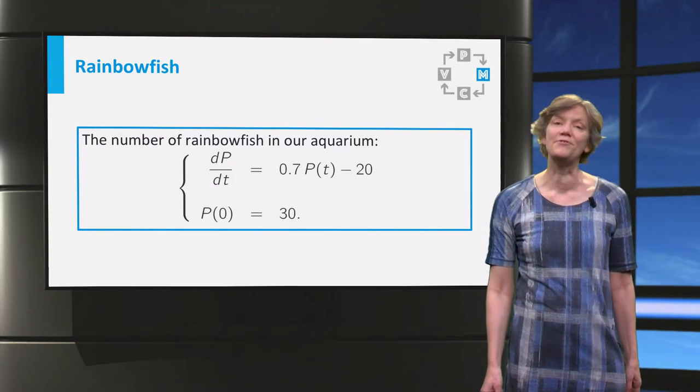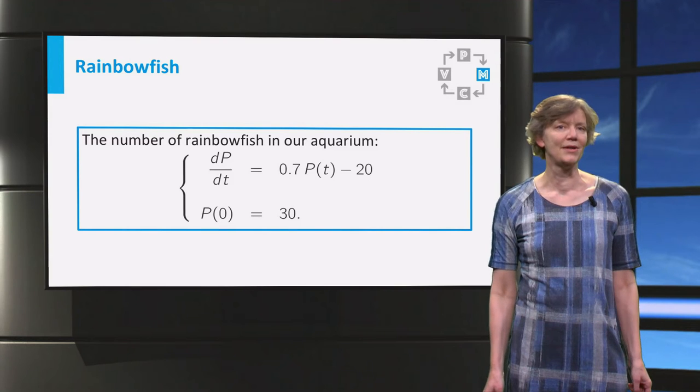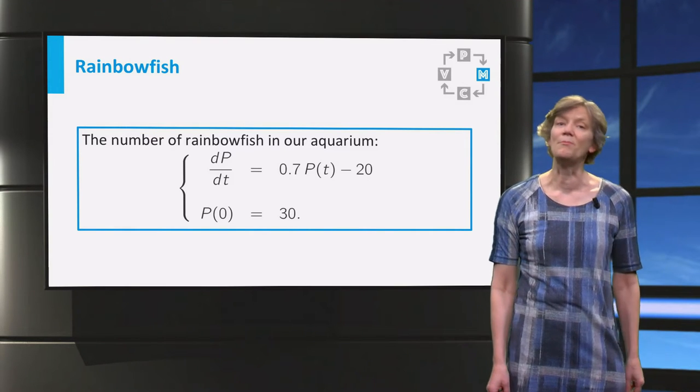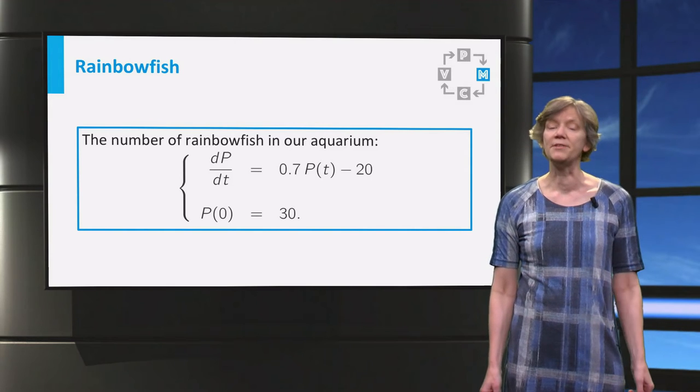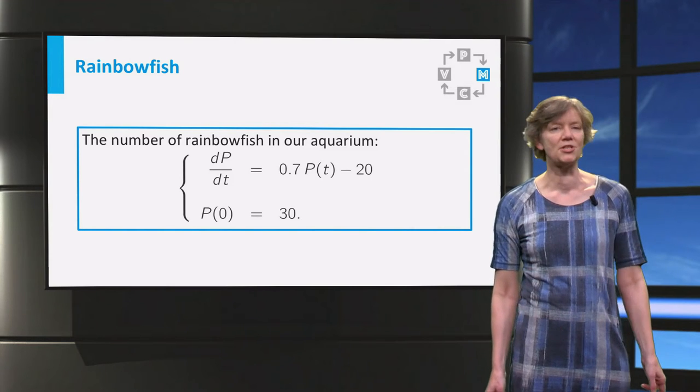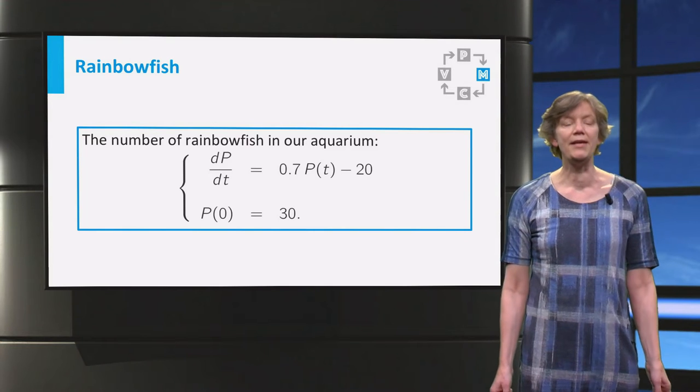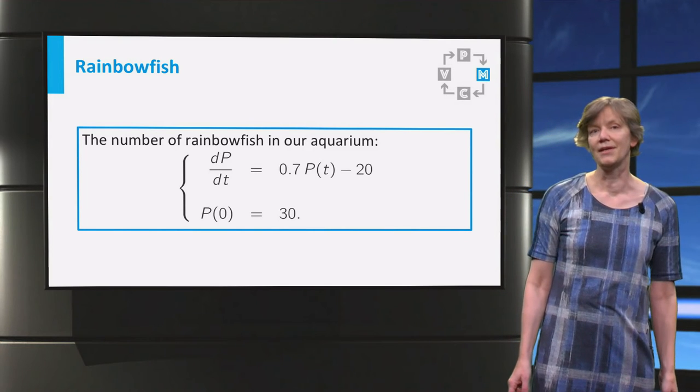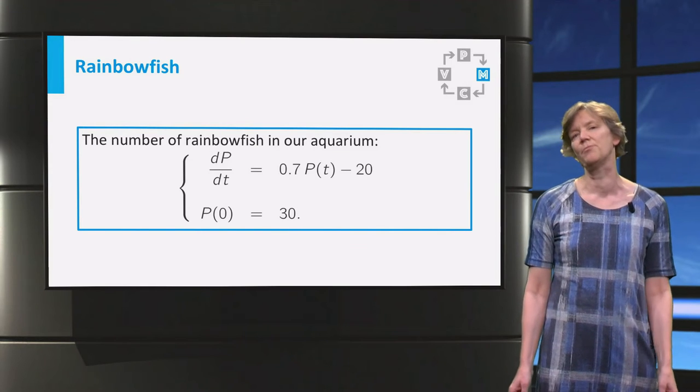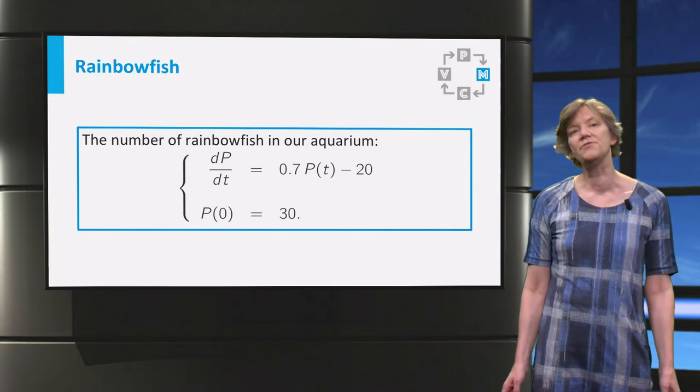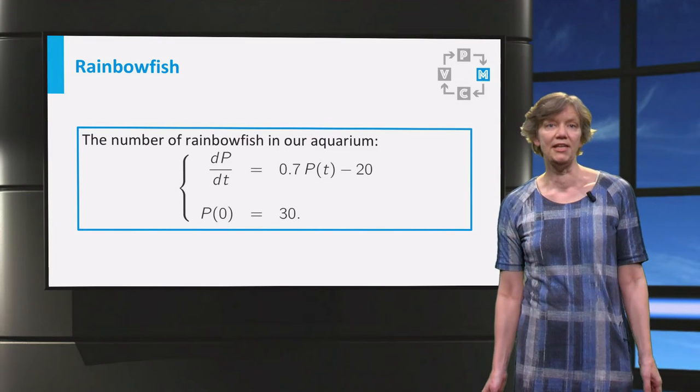We are modeling the number of rainbow fish in a large aquarium. We constructed a mathematical model for the population size P. The differential equation dP/dt equals 0.7P minus 20. The birth rate of 0.7 means that for each fish in the population, 0.7 new fish hatch each day.